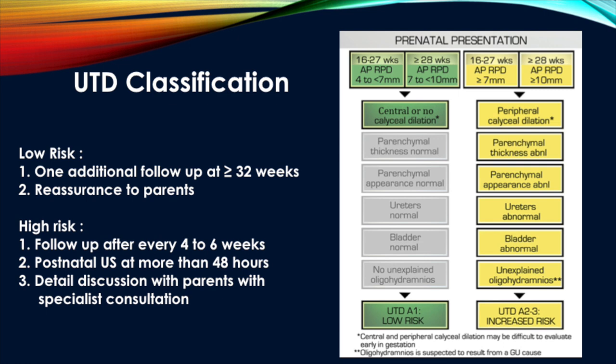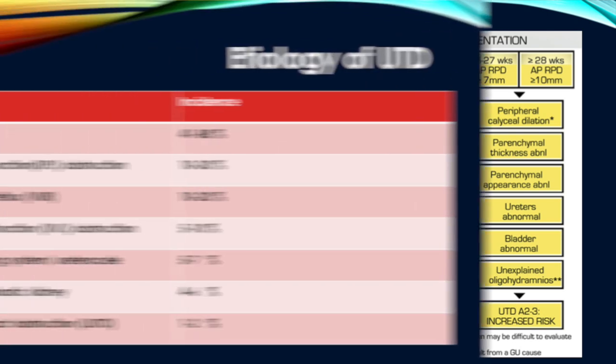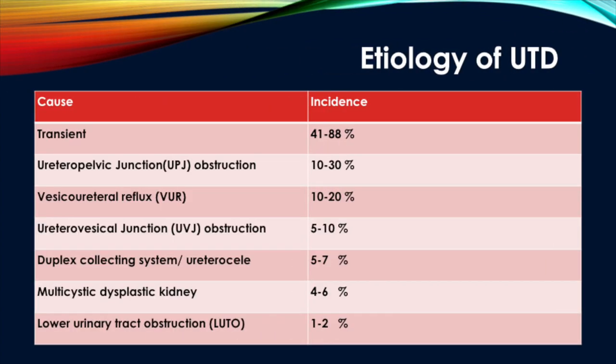The UTD classification system also suggests a follow-up protocol. In the low risk group, one additional follow-up is required at 32 weeks of gestation, and parents can be reassured that chances of disease progression are less. In the high risk group we need follow-up every 4 to 6 weeks; postnatally, ultrasound should be done after 48 hours of delivery. A detailed discussion with parents regarding disease progression is needed, and specialist consultation for postnatal management is important in the high risk group.